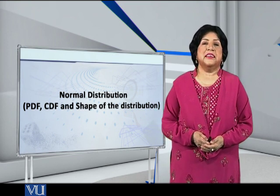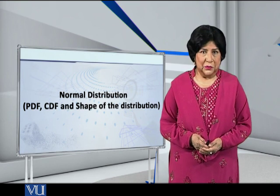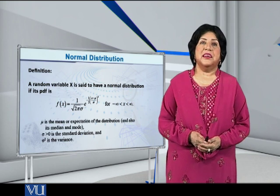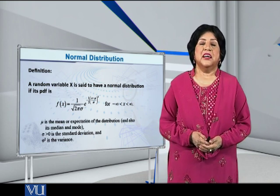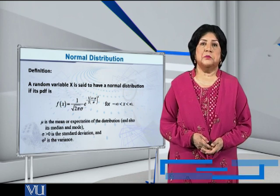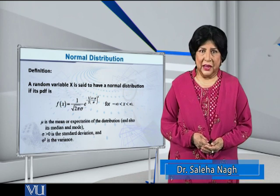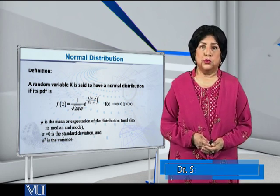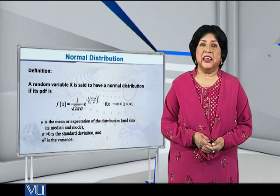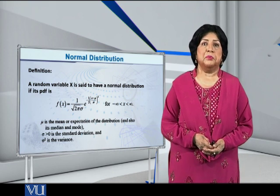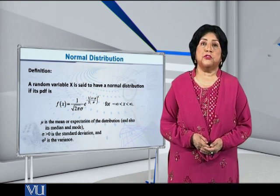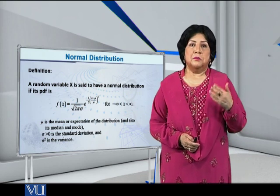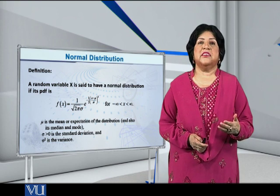What is the basic definition of the normal distribution? It goes as follows. A random variable X is said to have a normal distribution if its PDF is given by f(x) = 1/(σ√(2π)) × e^(-1/2((x-μ)/σ)²) for -∞ < x < ∞.